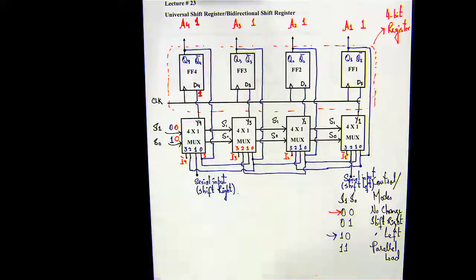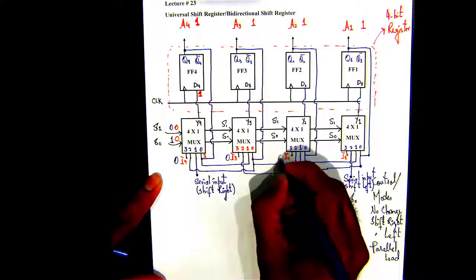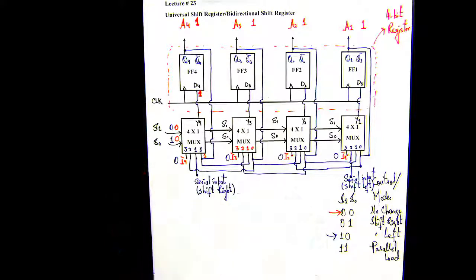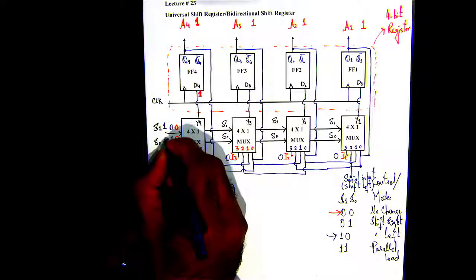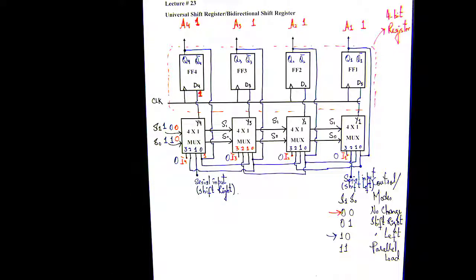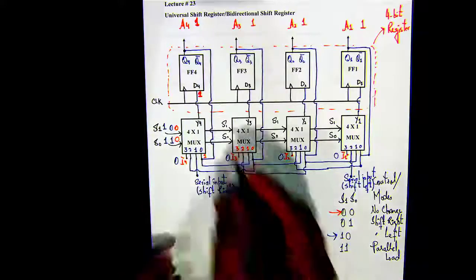So what this means: say at the I4 you got zero, zero, zero at I4, I3, I2, and I1. If the selector switches are set to one and one, what would be Y4, Y3, Y2, and Y1, the output of the mux? Because I4 is zero and selector switch is set to one one, so Y4 will be zero.